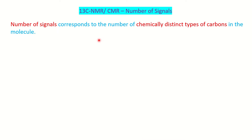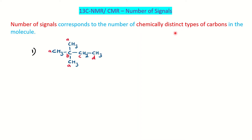Basically, if you have already studied proton NMR, you must be knowing that in C-13 NMR we have chemically distinct types of carbons or chemically equivalent types of carbons. If you have chemically distinct types of carbons, that will give you an independent signal. We will see this by taking one example.